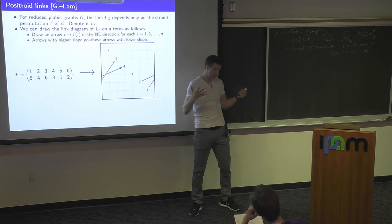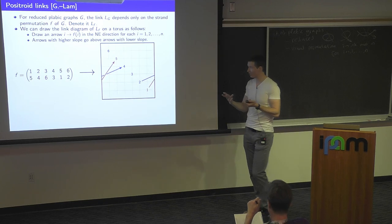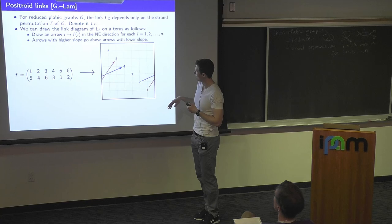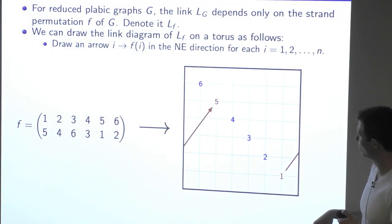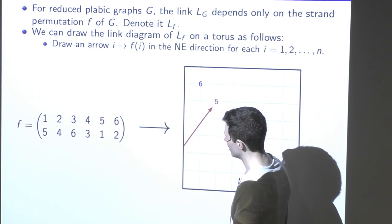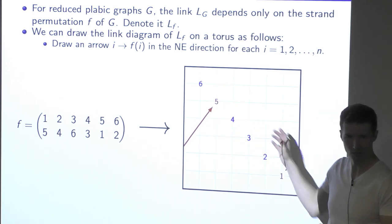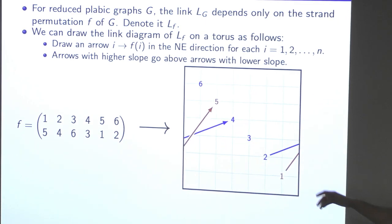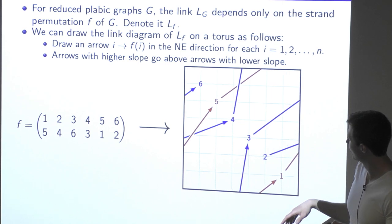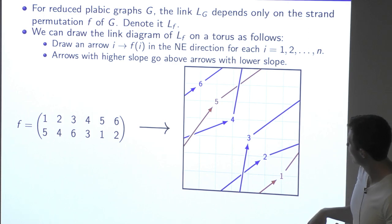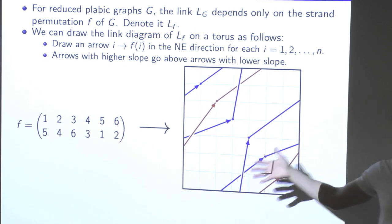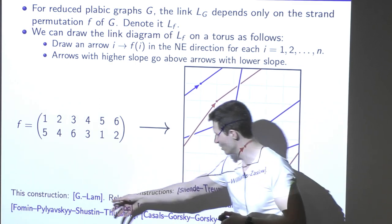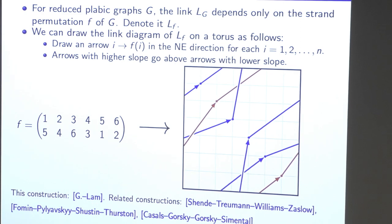For reduced plebik graphs, there is an even more concrete procedure. Since the knot is invariant under square moves, the link only depends on the permutation (because any two plebik graphs with the same strand permutation are related by square moves). For any permutation, it's even easier to draw the knot. You take the torus, and if one goes to five in the permutation, you draw an arrow from one to five in the northeastern direction. Then two goes to four, so they cross — you draw the arrow of higher slope above the arrow of lower slope. Continuing: three goes to six, four to three, five to one, six to two. The colors correspond to the cycles. You join the endpoints and get a link diagram on the torus.